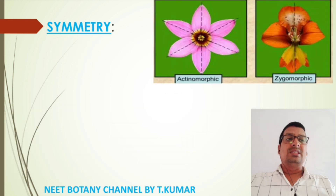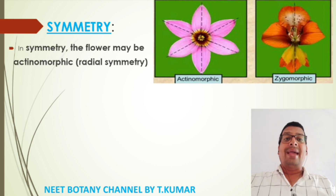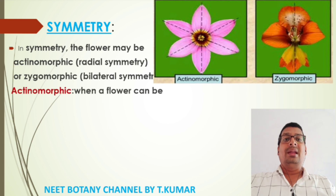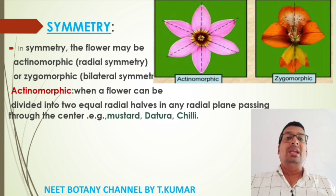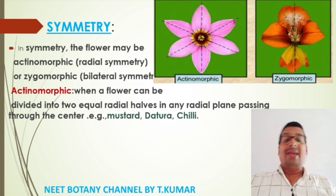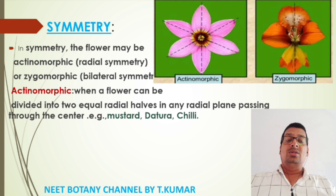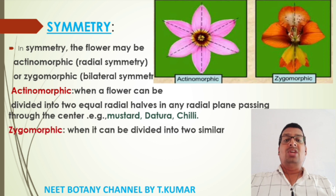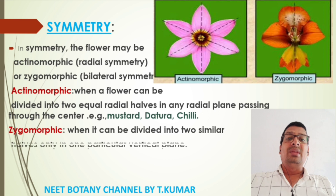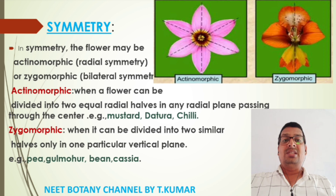Regarding symmetry, flowers may be actinomorphic (radial symmetry) or zygomorphic (bilateral symmetry). In actinomorphic flowers, the flower can be divided into two equal halves in any radial plane passing through the center — examples include mustard, datura, and chili. In zygomorphic flowers, it can be divided into two similar halves only in one particular vertical plane — examples include pea, gulmohar, bean, and cassia.